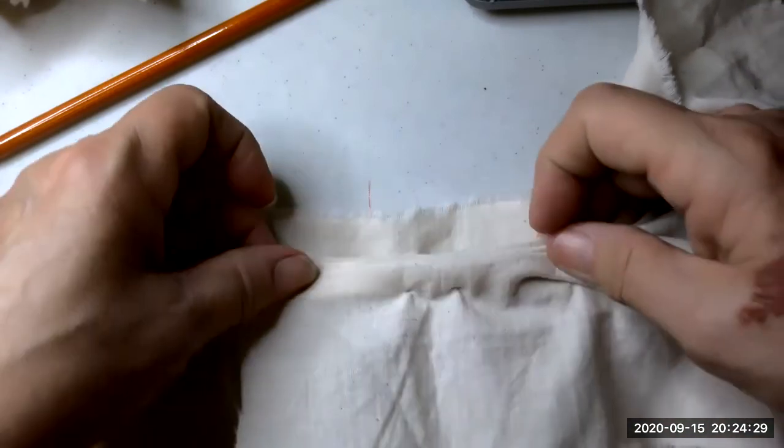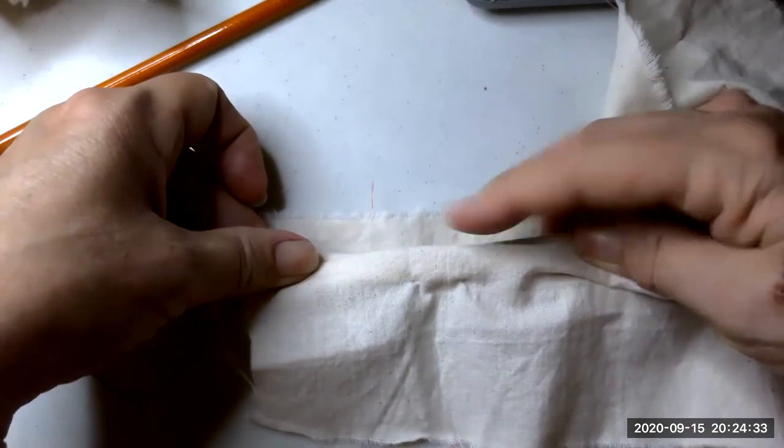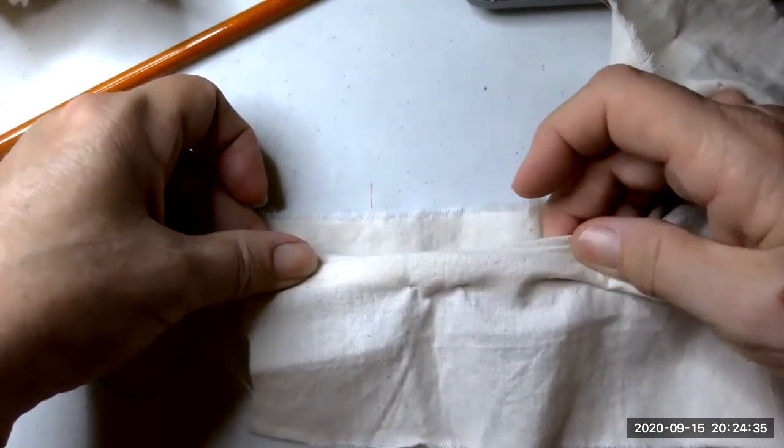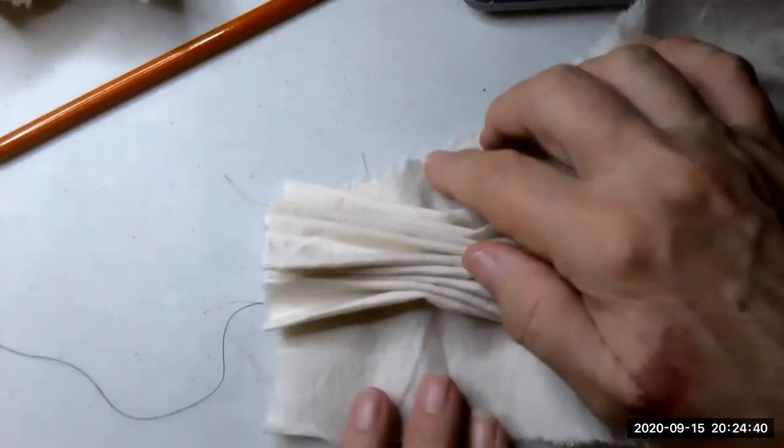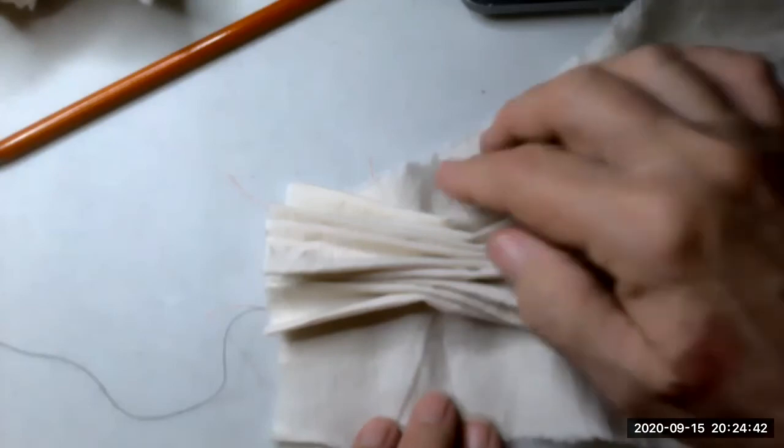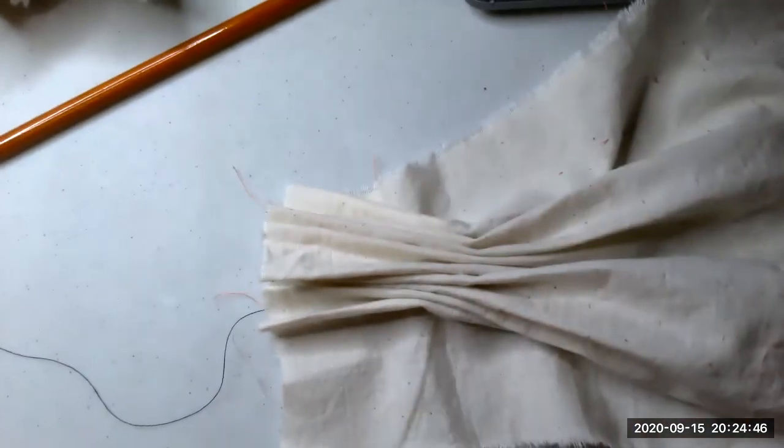An inch wide grid makes a fairly deep or steep pleat, and you can see how much the fabric has shrunk because of that. But the fabric will actually stretch back out once we have finished our smocking.